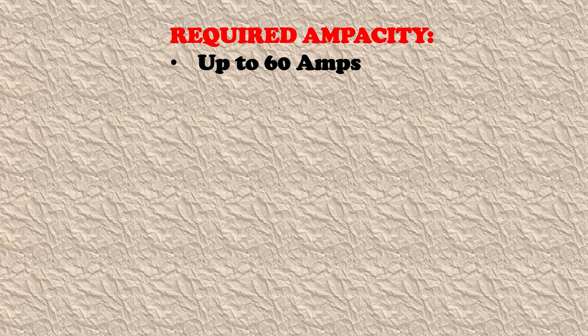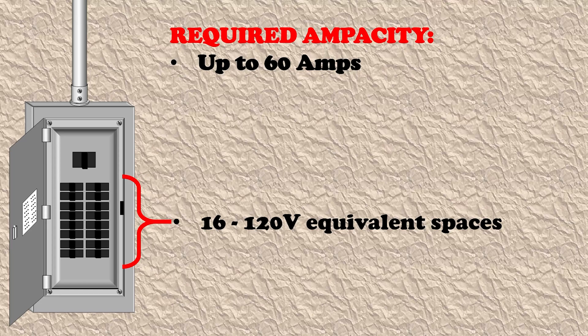The first situation we're going to look at is where our required ampacity is up to and including 60 amps. If we have up to and including 60 amps, we don't need to concern ourselves with whether there's a central electric furnace provided for — this just covers all situations. We are required to have 16 120-volt equivalent spaces, meaning 16 single pole breaker spaces. The code states that at least half of those shall be double pole, and subrule one requires space for two 35-amp double pole breakers, all included in these 16 120-volt equivalent spaces.